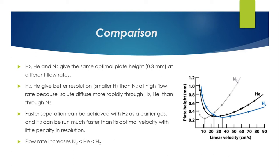H₂ and He give better resolution (smaller H) than N₂ at high flow rate because solutes diffuse more rapidly through H₂ and He than through N₂. Faster separation can be achieved with H₂ as a carrier gas, and H₂ can be run much faster than its optimal velocity with little penalty in resolution. Flow rate increases in the order N₂, He, H₂.